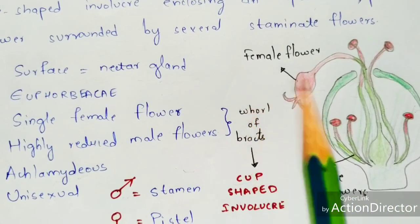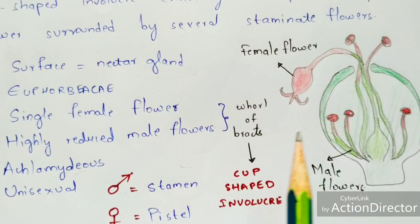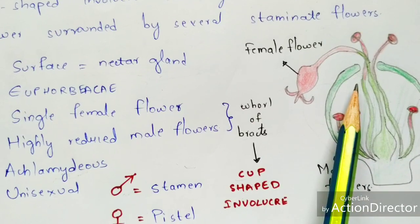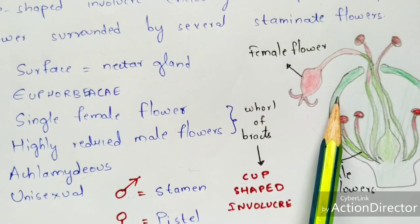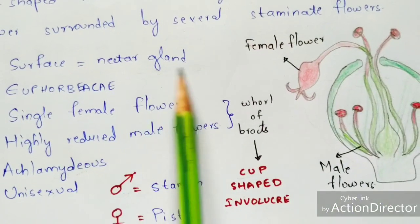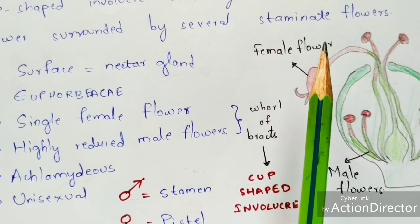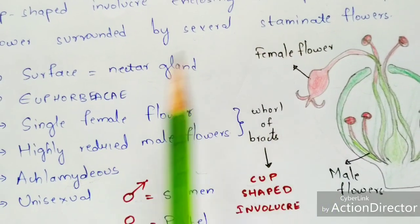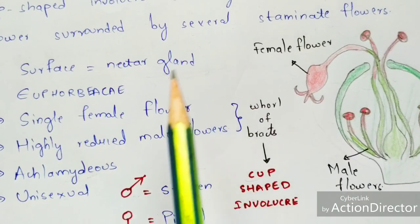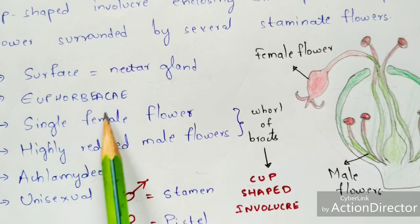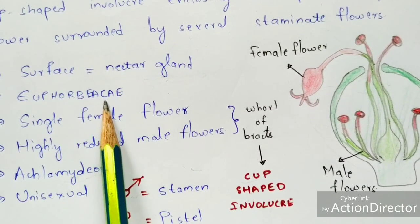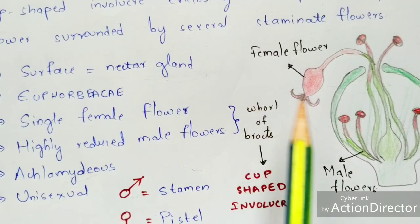In cyatheum inflorescence, at the surface region a nectar gland will be present. I didn't draw the nectar gland here; at the end of the video the original photograph diagrams will be present and there you can find it. The nectar gland is yellowish in color and its main function is secretion of sugar-rich liquids, which mainly helps in the development or growth of the flower or fruit. This cyatheum inflorescence you can see in the Euphorbia family.